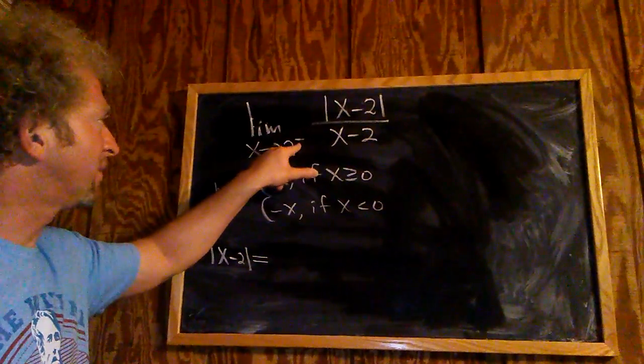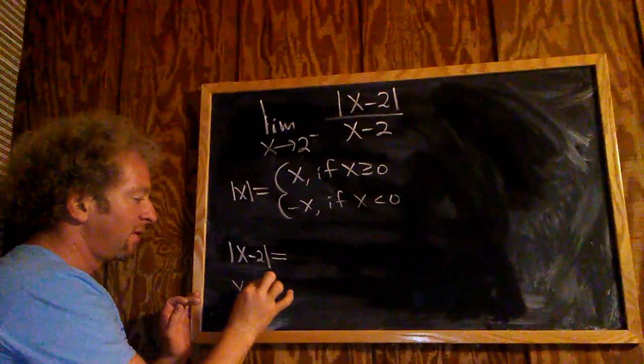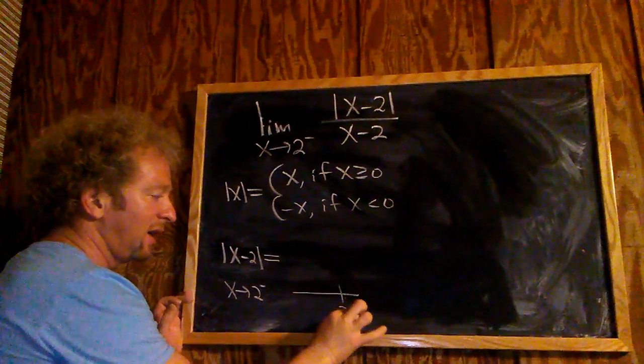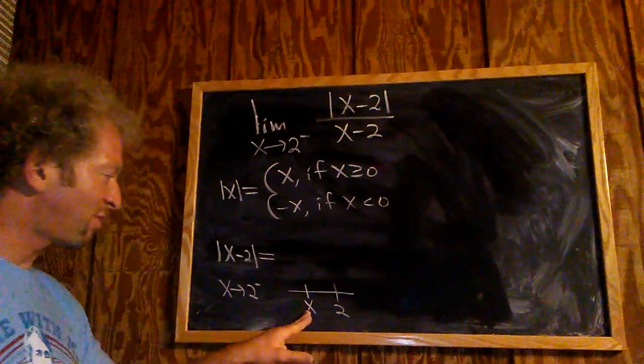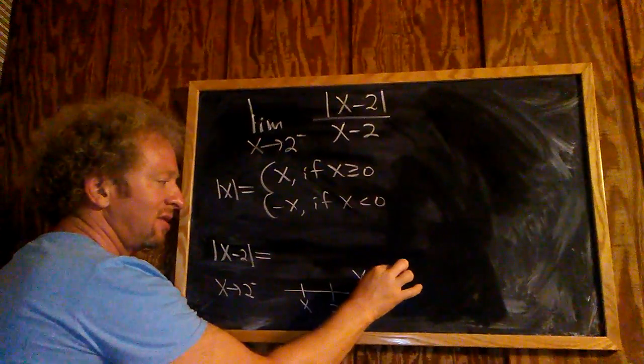So x is approaching 2 from the left. We draw a little number line - here's 2, left and right. So here's x, approaching 2 from the left. That means that x is less than 2.